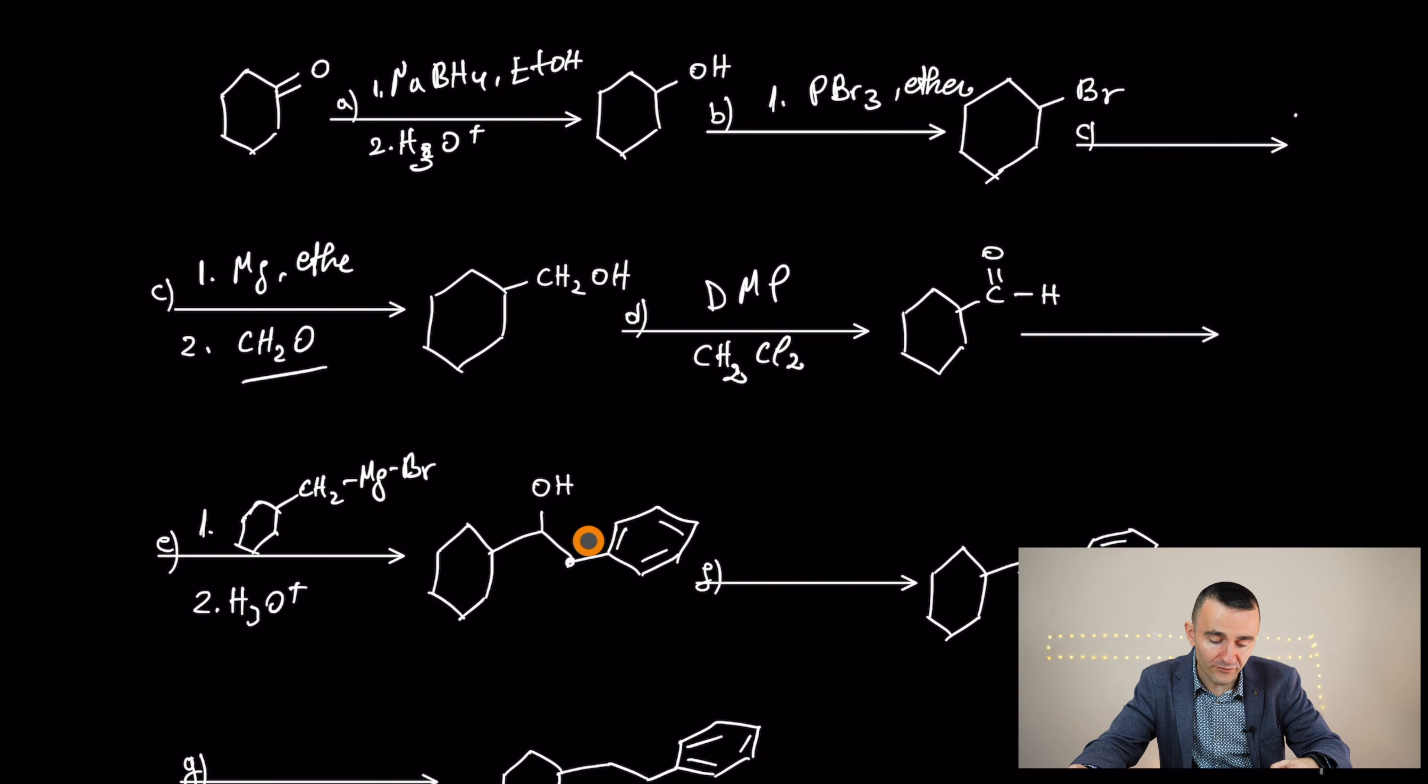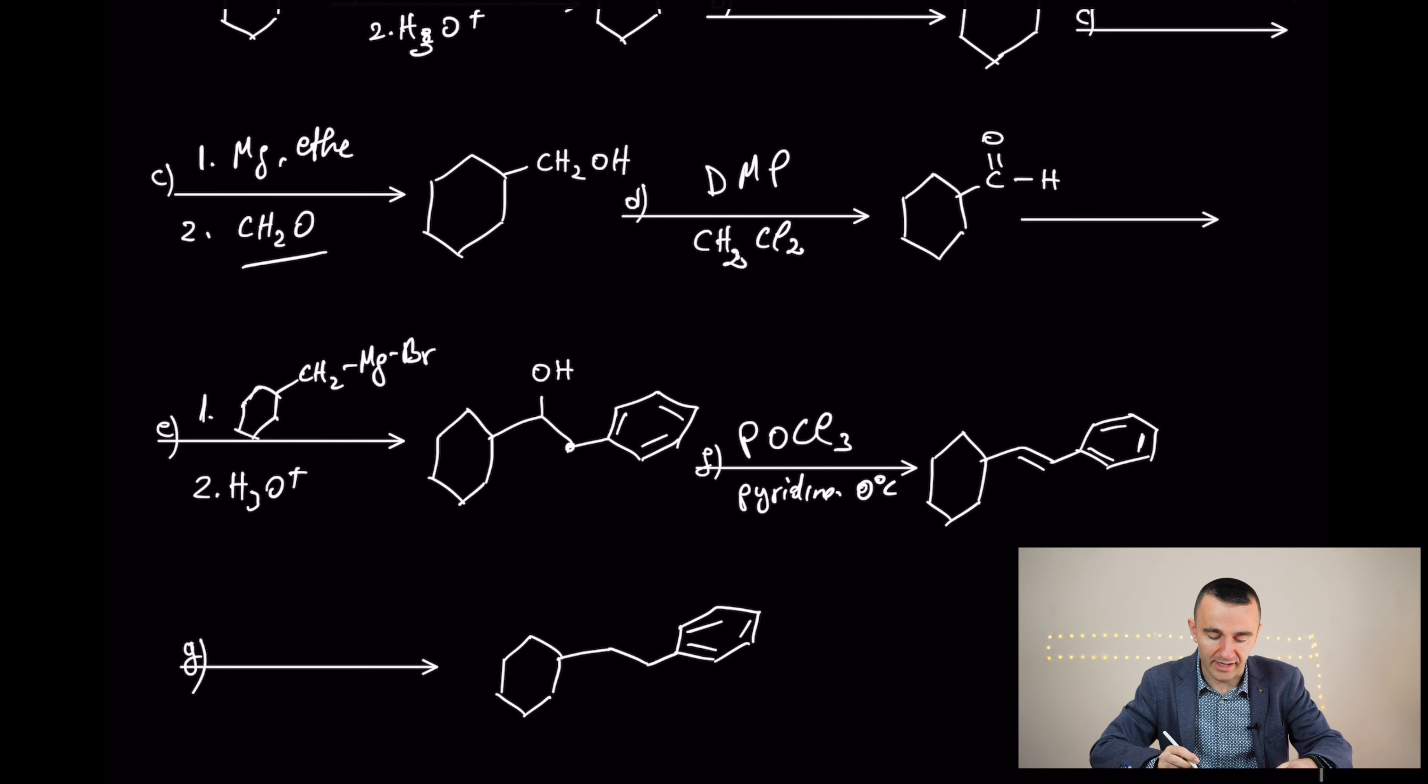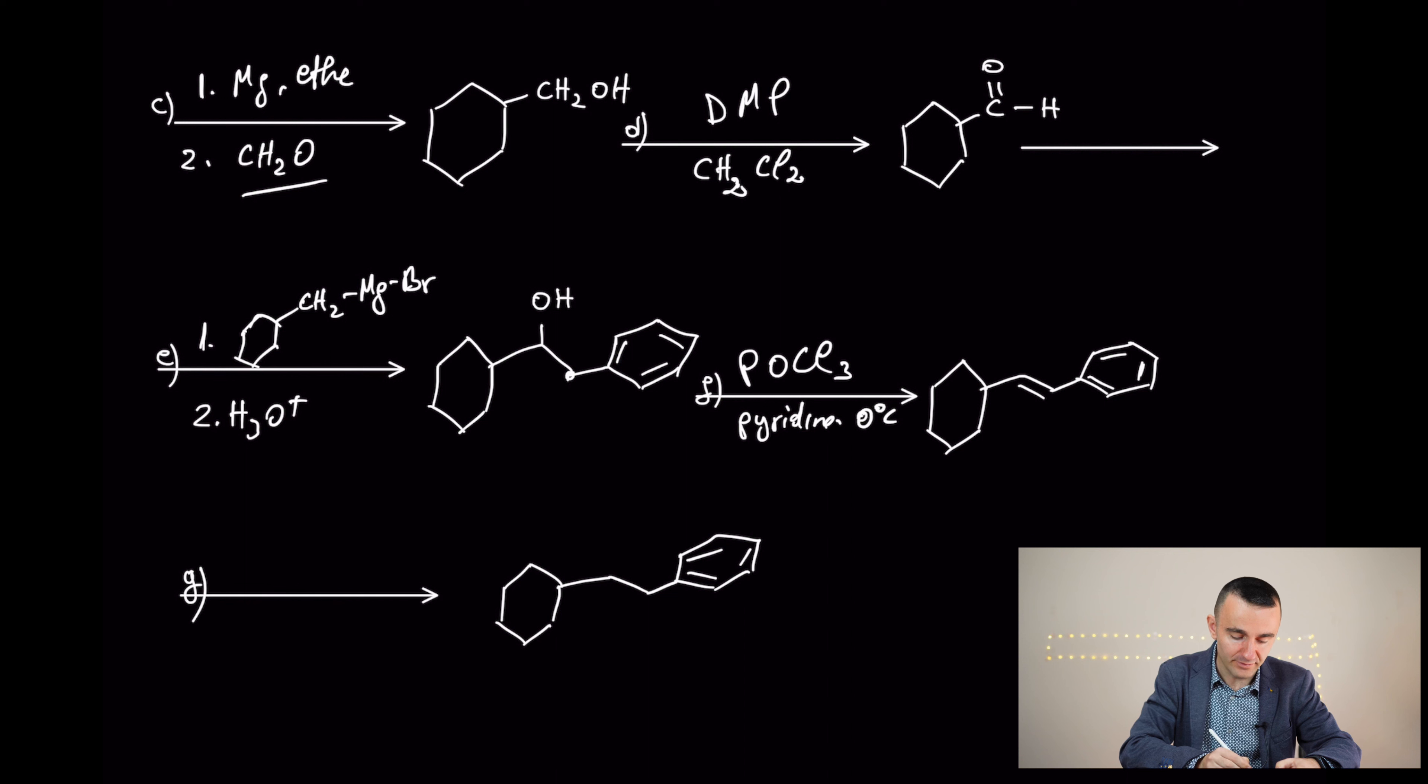Now, to move from secondary alcohols to alkenes, what we said, phosphorus oxychloride was one of them to use in soft conditions. Right? In pyridine. Room to zero degrees Celsius. Okay, and if you want to reduce a double bond, we have hydrogen reduction in palladium. Okay?